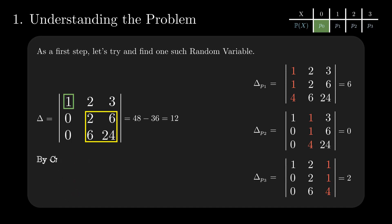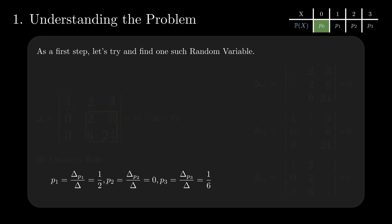With all the components determined, we apply Cramer's rule and get the values a half, 0, and a sixth for p1, p2, and p3, respectively.